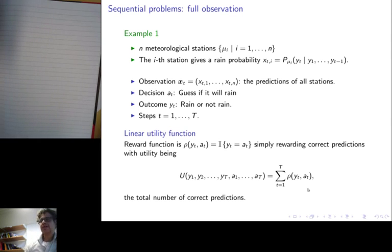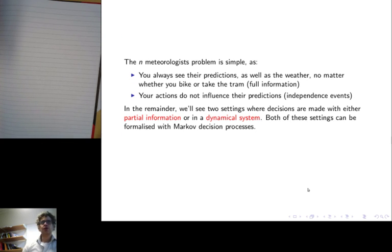Now, in some sense, this is an easy problem. Because we always see the predictions of the meteorological stations, and we also see what the weather is. And our actions do not actually influence the predictions.